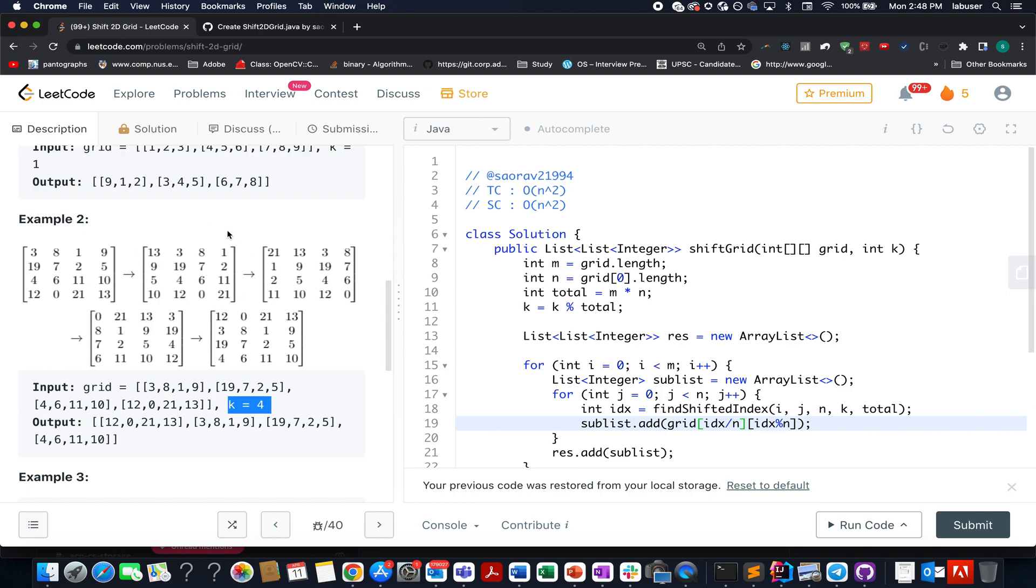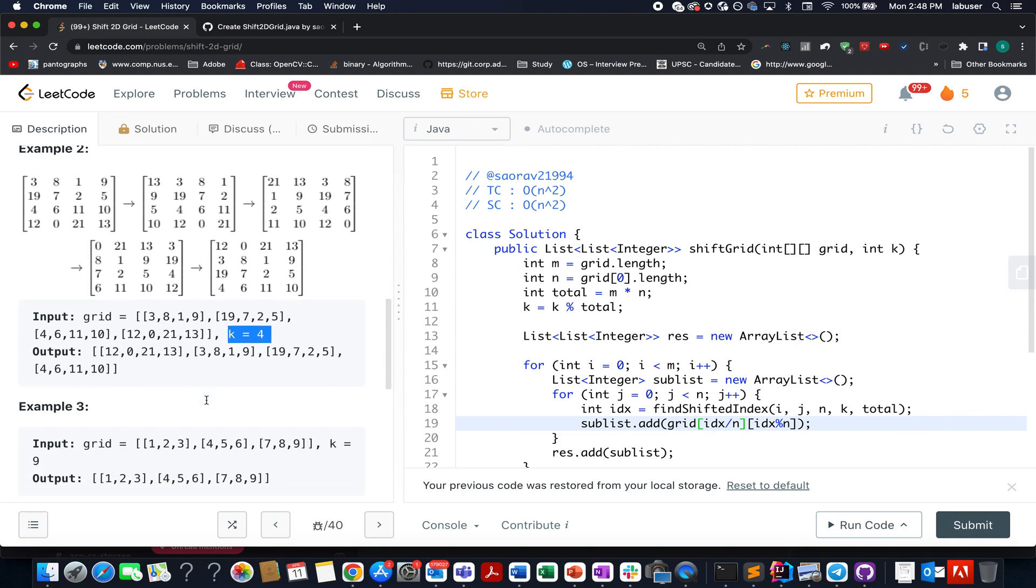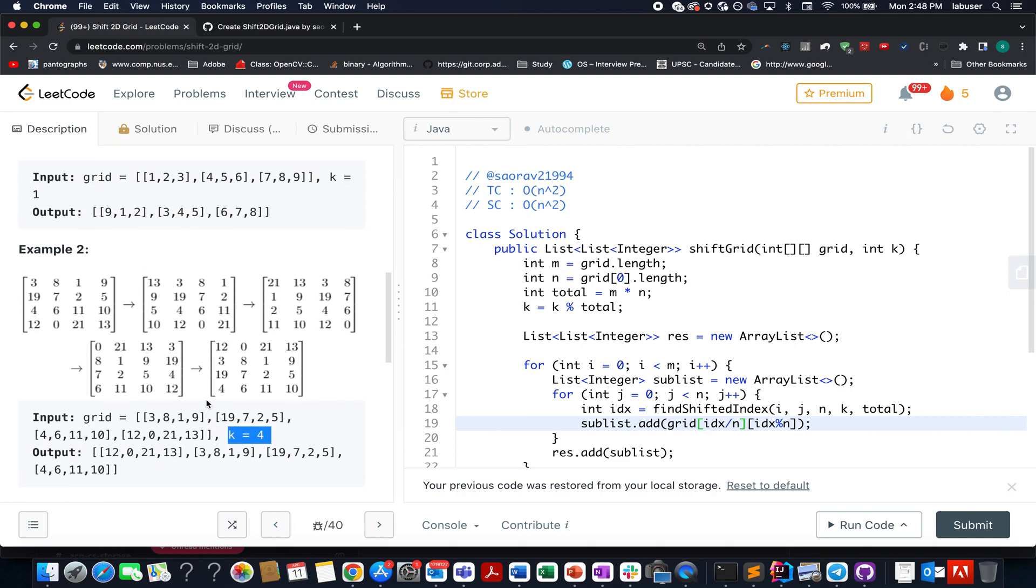This is what we got the result after one shift, we have to do this 4 times. And this time 21 got over here and the entire grid shifted by one unit. Similarly then 0 got over here, then 12 got over here. So I will be walking you through this example as well as the algorithm to go about it by the presentation. So let's quickly hop on to it.